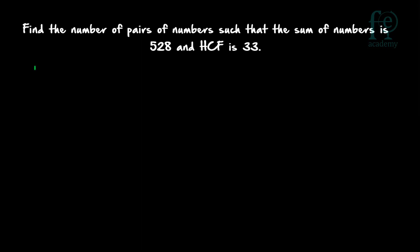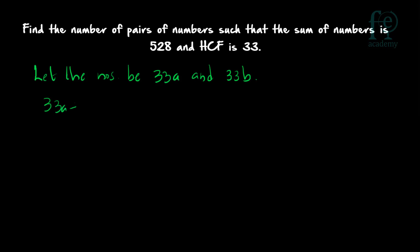Since HCF is 33, both numbers should be multiples of 33. Let the numbers be 33A and 33B. Then 33A + 33B = 528, so A + B = 528 ÷ 33 = 16. Just like the previous question, you have to find co-prime number pairs such that their sum is equal to 16.